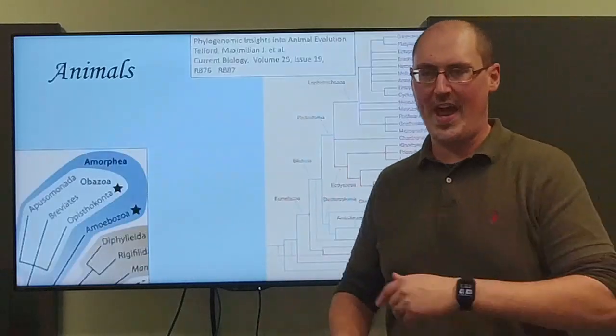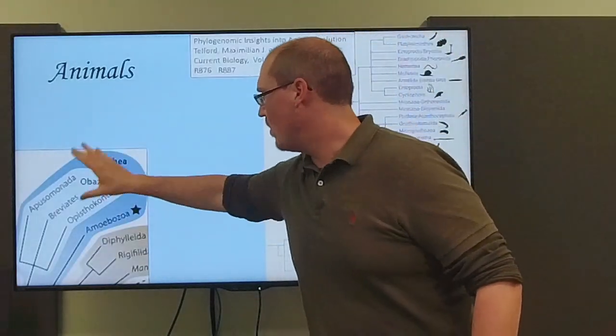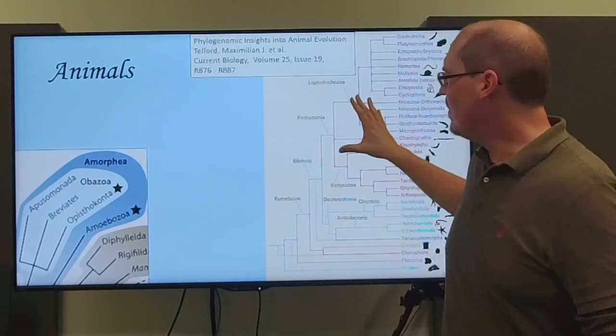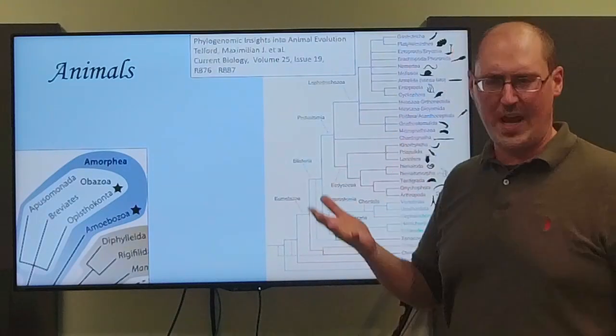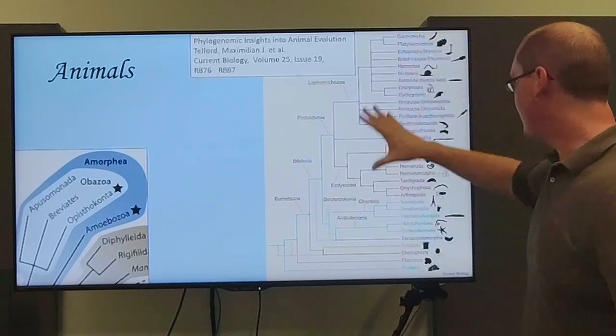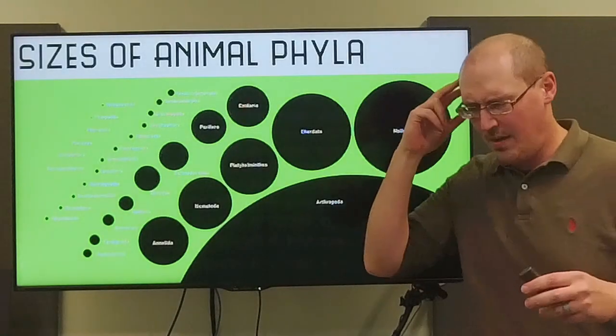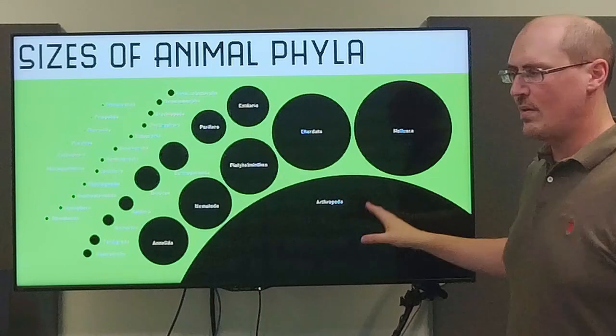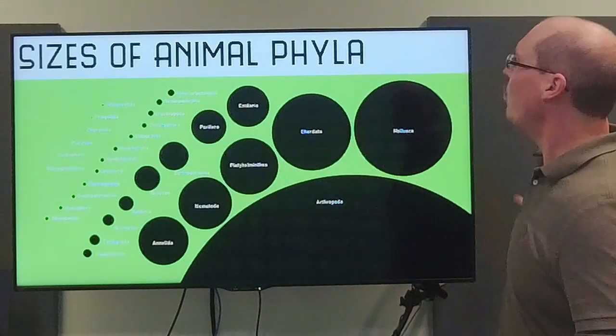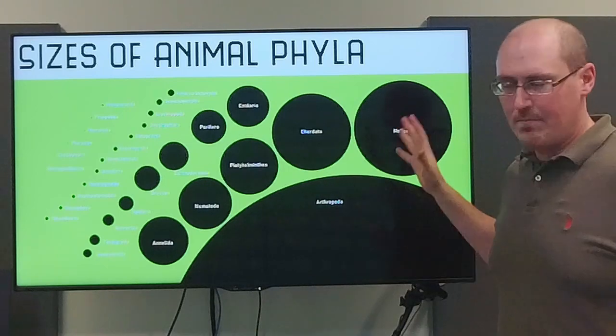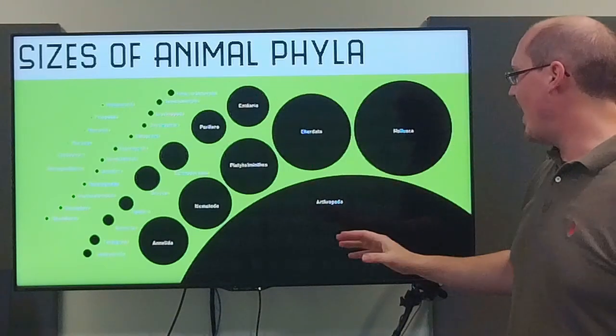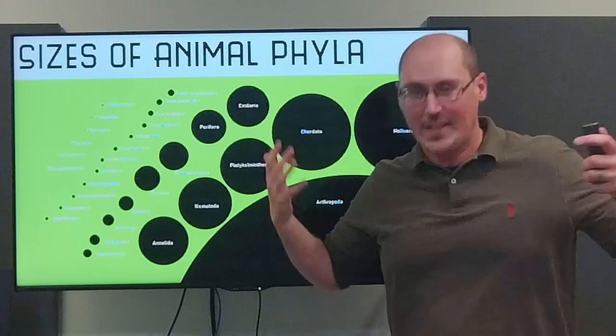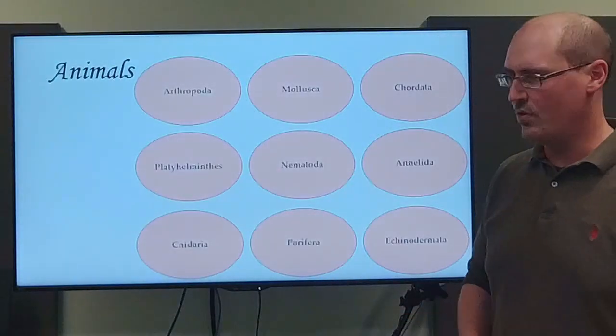So let's get started with animals. Animals are within this larger group, Amorphea, but then specifically Opisthokonta. There's about 32 different phyla, give or take a couple, depending on how you group them. Just to get a bit of a concept of the sizes, I've taken all the animal phyla and the circles represent the number of species. You can see here Arthropods are well in a way the most specious group, more than all the others combined.